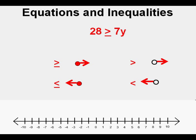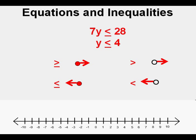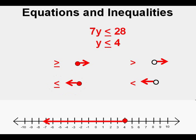Here's another inequality. Notice that the variable is on the right side of the inequality. To get it in a familiar form, we need to turn it around. But when we swap sides, we need to turn around the inequality sign too. So this becomes 7y is less than or equal to 28. We solve it by dividing by 7, so y is less than or equal to 4. We match the graphing method with the inequality symbol — a solid point at y equals 4 with the arrow to the left.